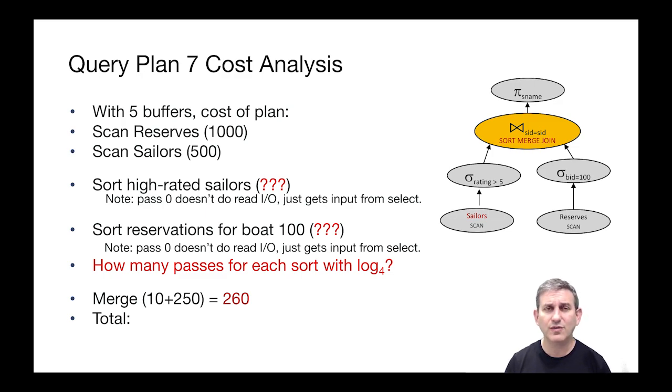So what's the cost to sort the high rated sailors? Note that unlike when we've talked about sorting from tables, here we've already paid the cost of scanning sailors. So in pass zero, we won't account for that cost. It's already been handled by assigning it to the scan node. So pass zero doesn't do read IO, it just gets its input from the selection.